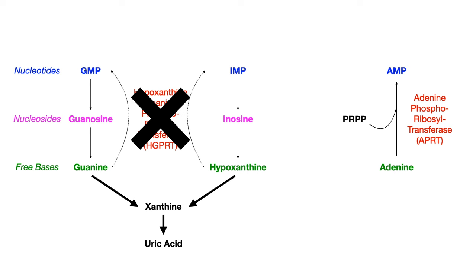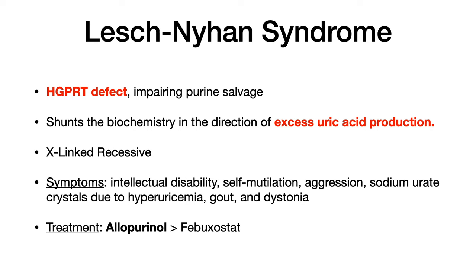The disease described is known as Lesch-Nyhan syndrome. Lesch-Nyhan syndrome is an HGPRT defect — we cannot recycle guanine or hypoxanthine, and instead it shunts the biochemical pathway in the direction of uric acid, causing an extremely excessive, pathologic amount of uric acid. This disease is X-linked recessive. The symptoms include intellectual disability, self-mutilation, aggression, sodium urate crystals in the urine due to hyperuricemia, gout because uric acid ends up in different joints, and dystonia.